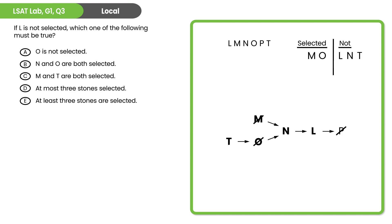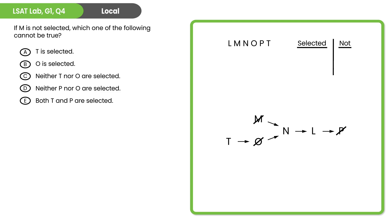Which one of the following must be true? Answer A says O is not selected — we know O is selected, so eliminate A. Answer B says N and O are both selected — N is not selected, eliminate B. Answer C says M and T are both selected — M is selected but T is not, eliminate C. Answer D says at most three stones are selected — we've got M and O in, and the possibility of one more with P, but since L, N, and T are all out it's impossible to have more than three — this looks right. Answer E says at least three are selected — we only have two confirmed and don't have to have P. So answer choice D is correct.